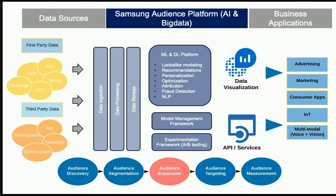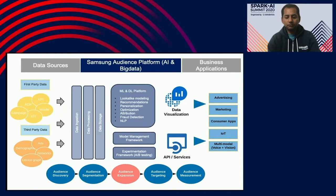There are five stages in our audience pipeline. First is audience discovery, where we ingest data from all devices and user interactions. Next is high-level segmentation — understanding demographics, location, etc. This is followed by audience expansion, which is today's focus. Then audience tuning, to target specific campaigns. Finally, audience measurement techniques, especially attribution, assess how well you've targeted.